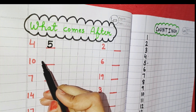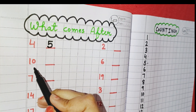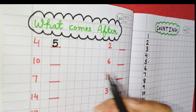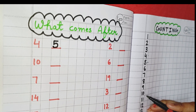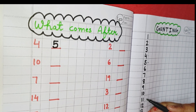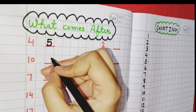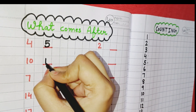Now, the next number here is 10. You can see this is 10 and the number which comes next to 10 is 11. So, you write here 11.